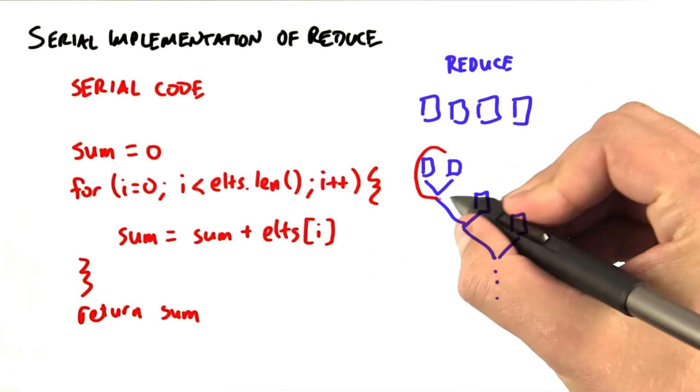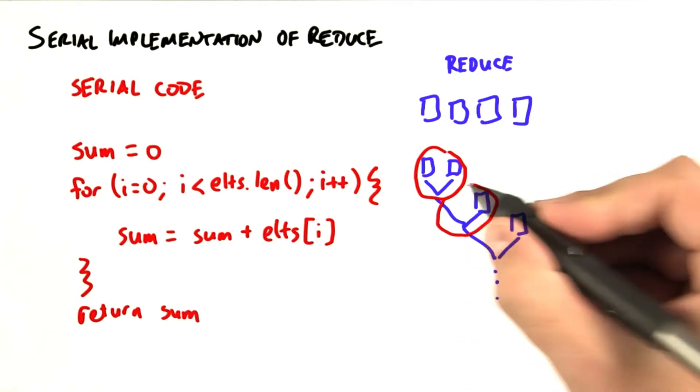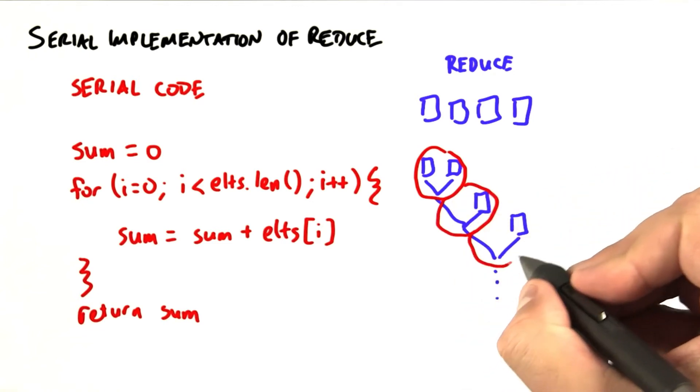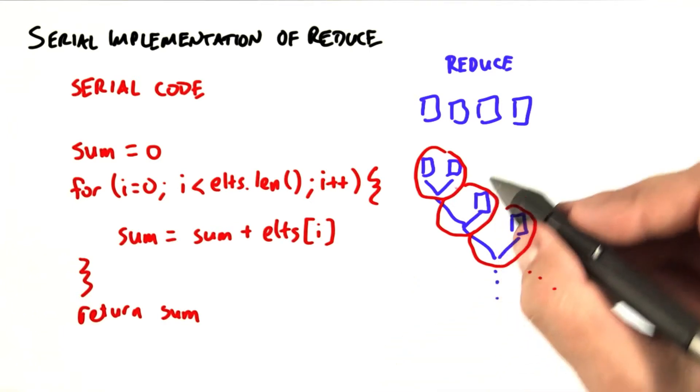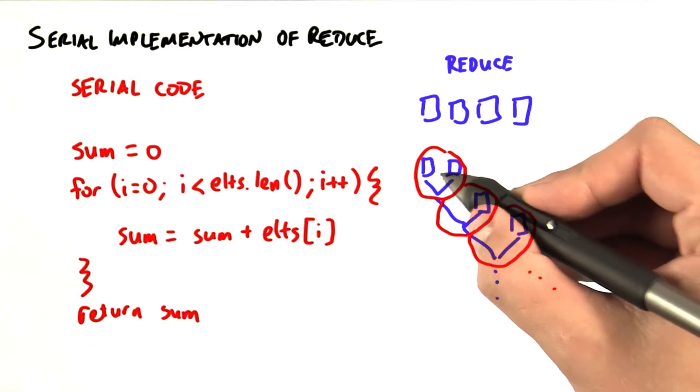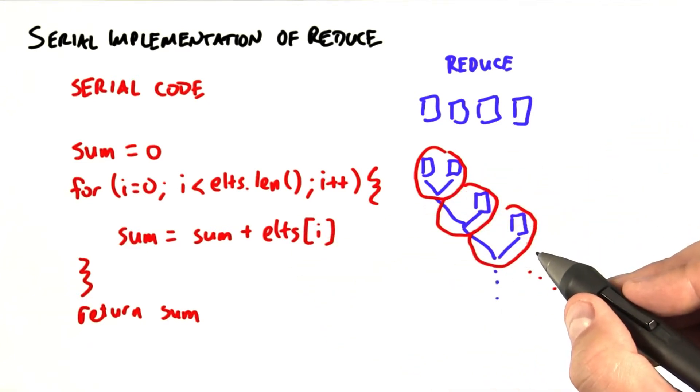So on the first iteration we do this first add here and we take the result on the second iteration, do a second add here, on the third iteration we do a third add, and so on. So what's different about this than the map example is that this add operation is dependent on the previous one, whereas in map all these things can happen in parallel and at the same time.